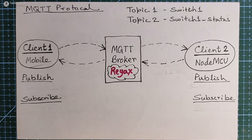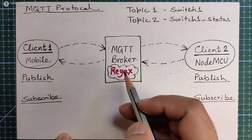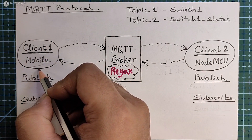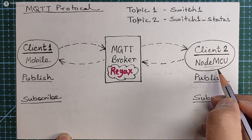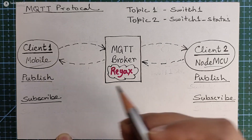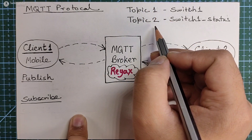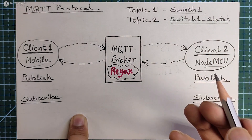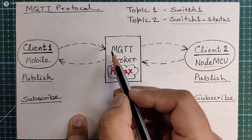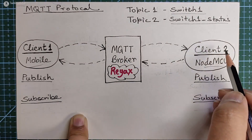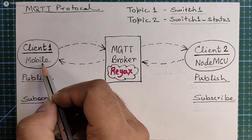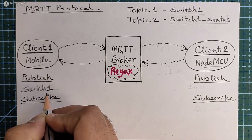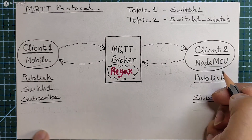Now let me quickly discuss how the MQTT protocol works. This is our MQTT broker, which is the React's MQTT server, and these two are the MQTT clients. Client 1 is our mobile phone and client 2 is the NodeMCU. Now each client can publish or subscribe to a topic. We will discuss two topics: topic 1 is switch1 and topic 2 is switch1 status. A topic is like a channel on which a client can publish data to the MQTT broker. Client 1 can publish data on topic switch1, and client 2 subscribes to this topic.